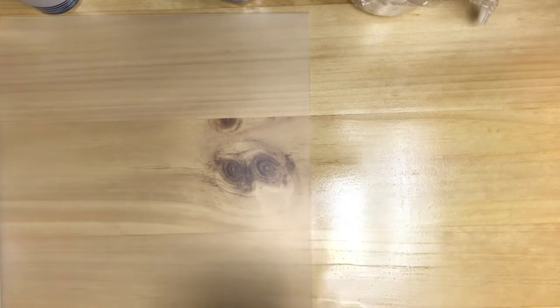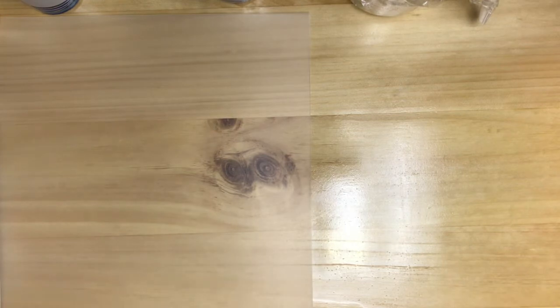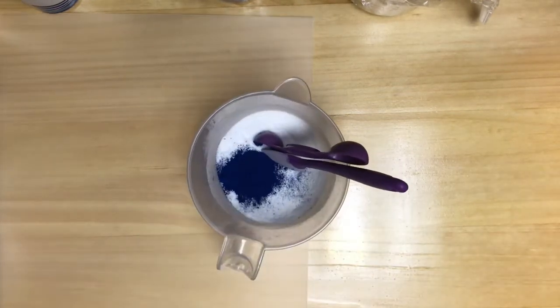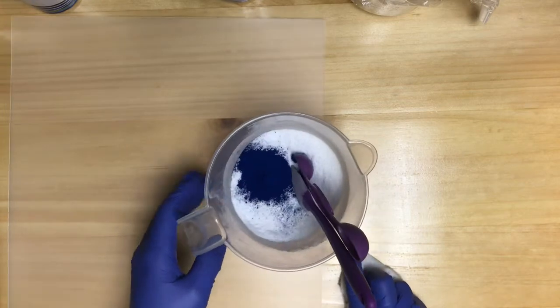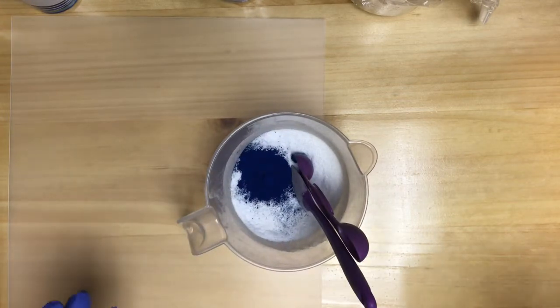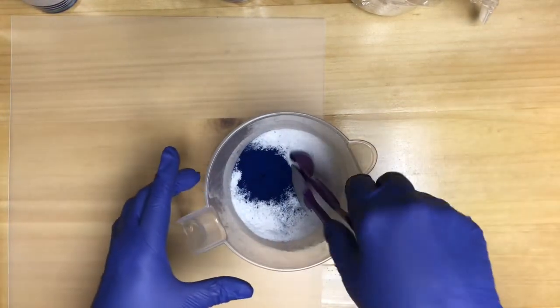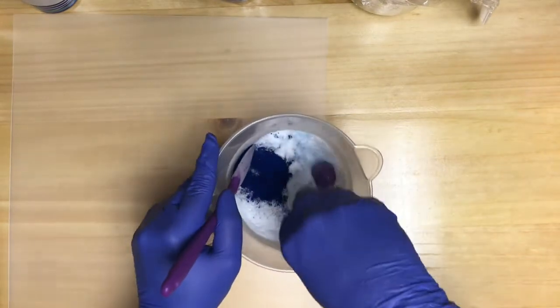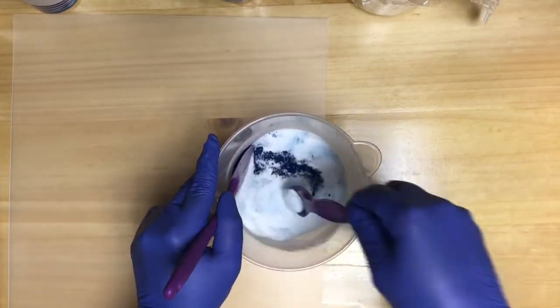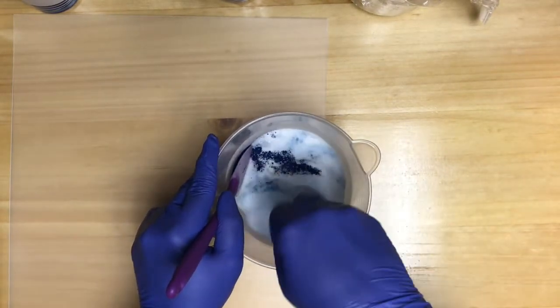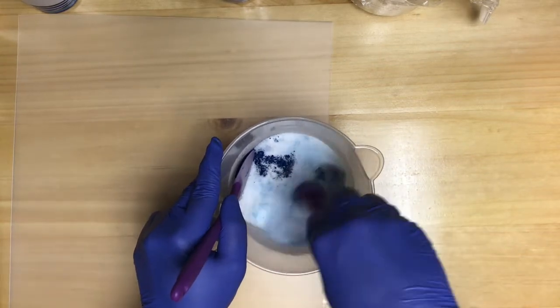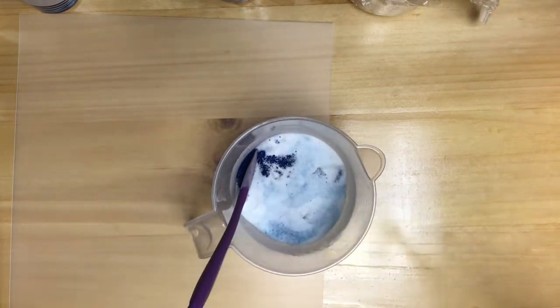Now, I am just going to put that right in there. I am going to try not to mess up this beautiful table my husband made me. So, there is our colorant in there. And I like to just mix it a little bit with the measuring spoon. Just so not to waste the colorant that gets stuck in there. So, I am going to put that right in there.